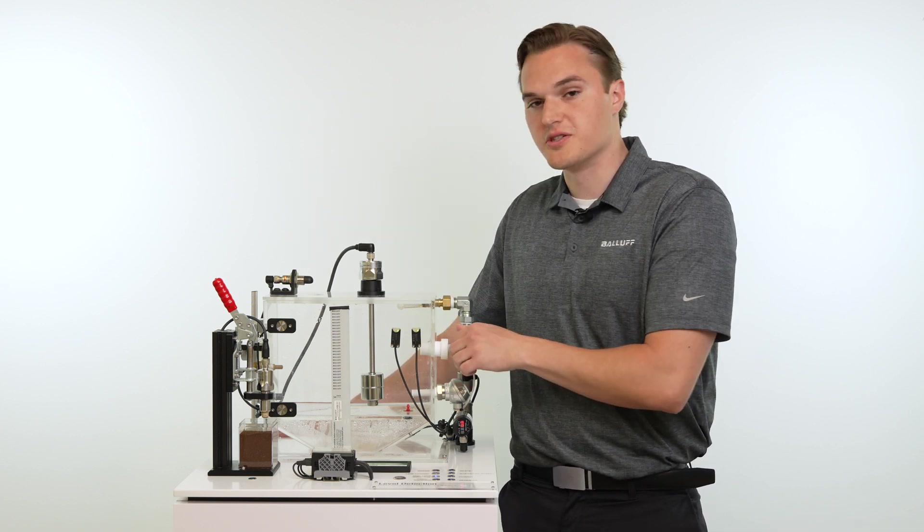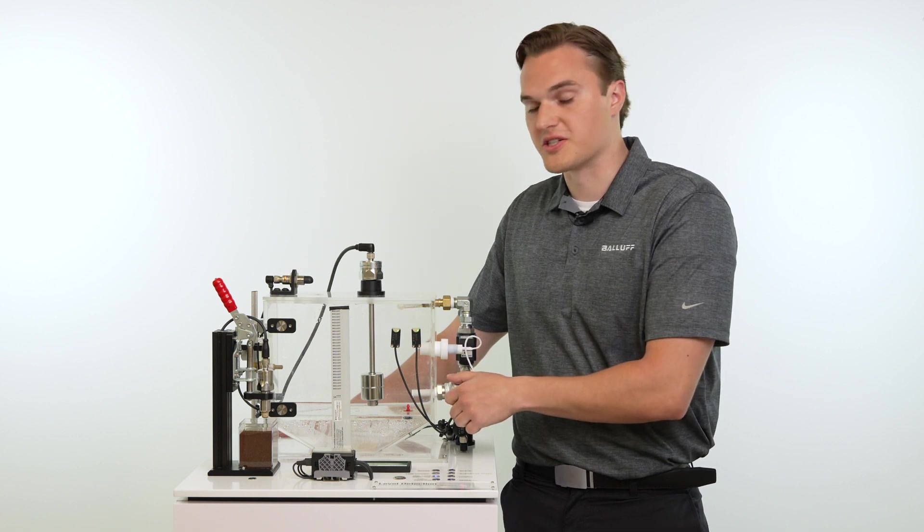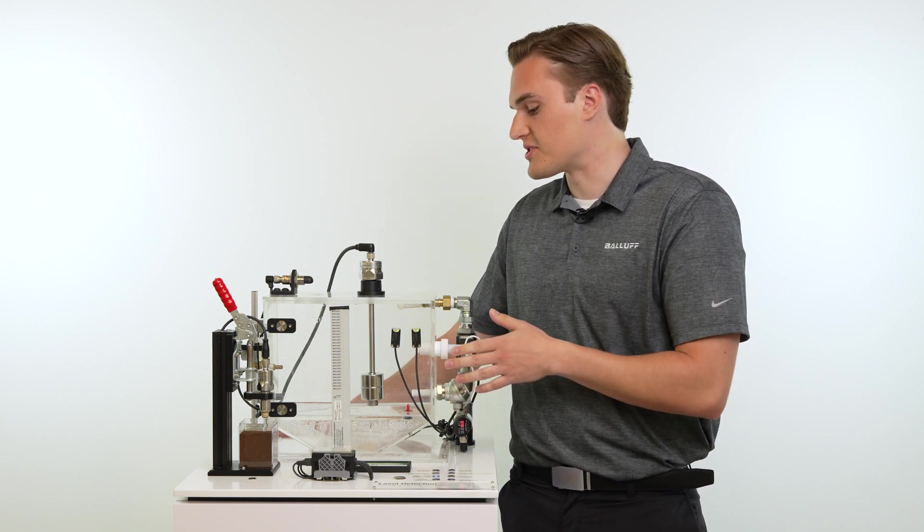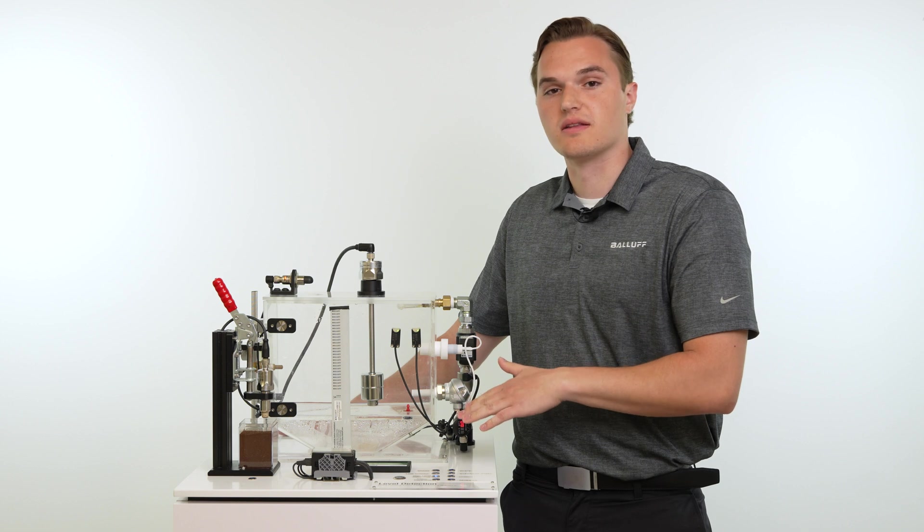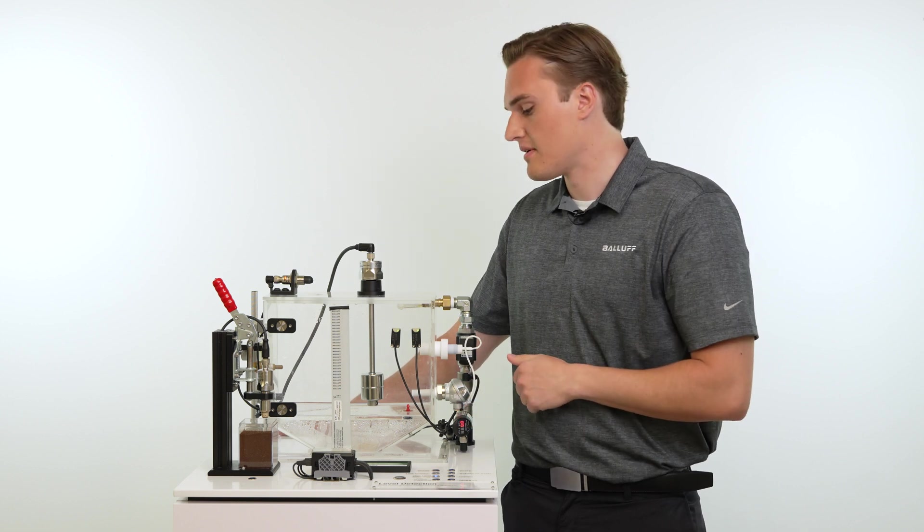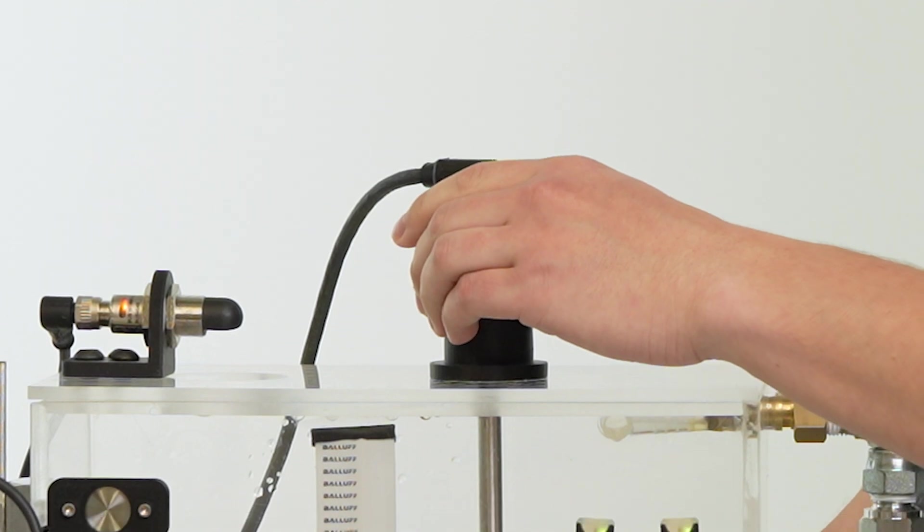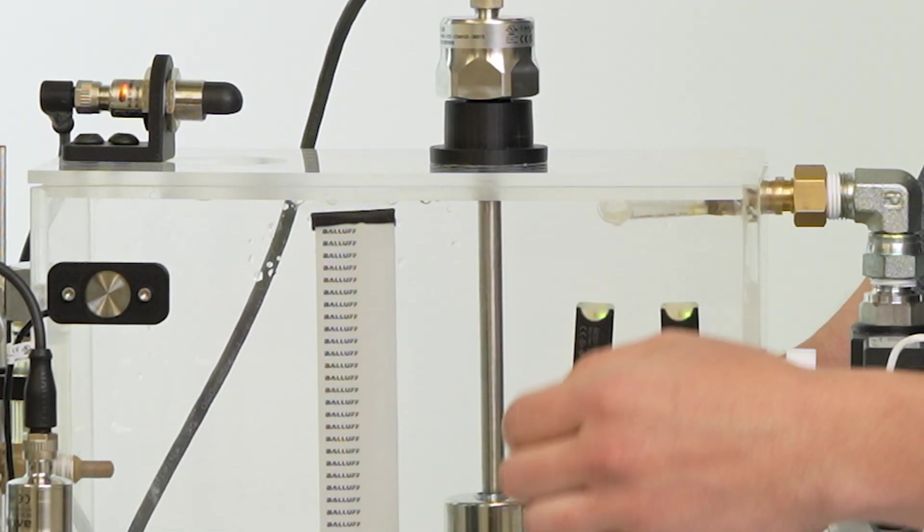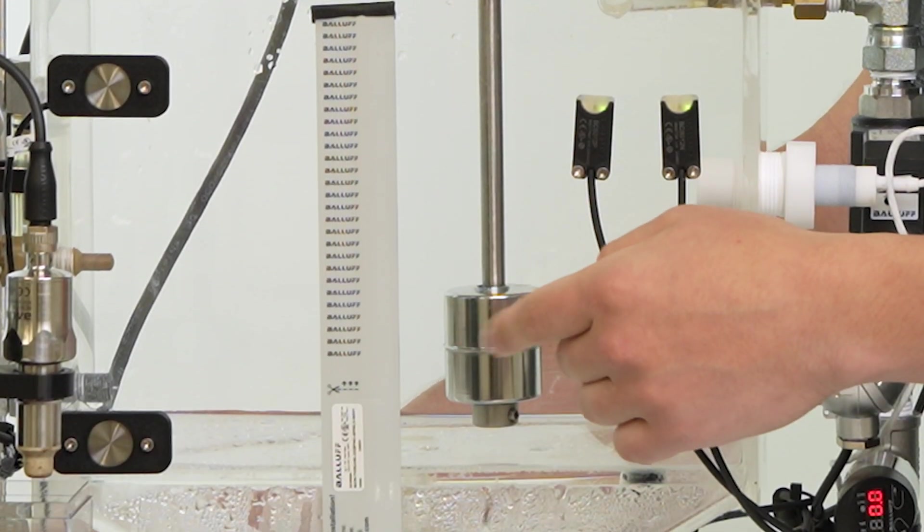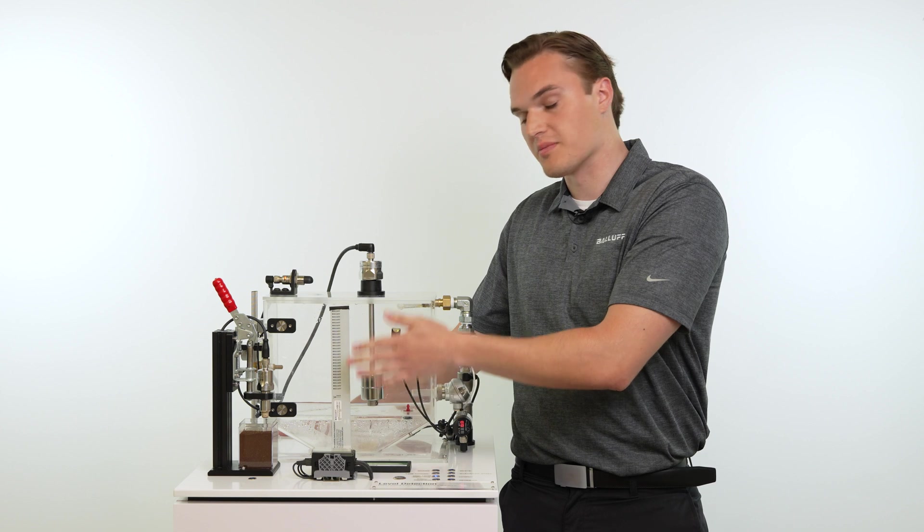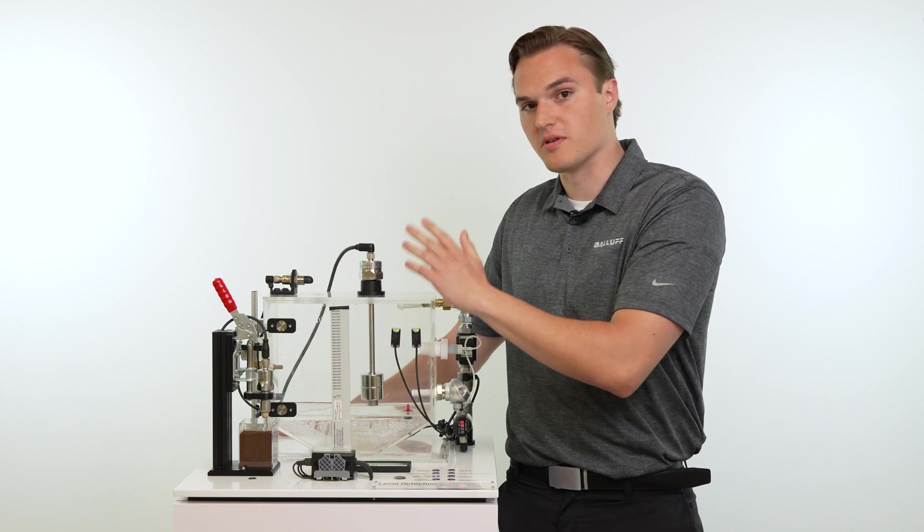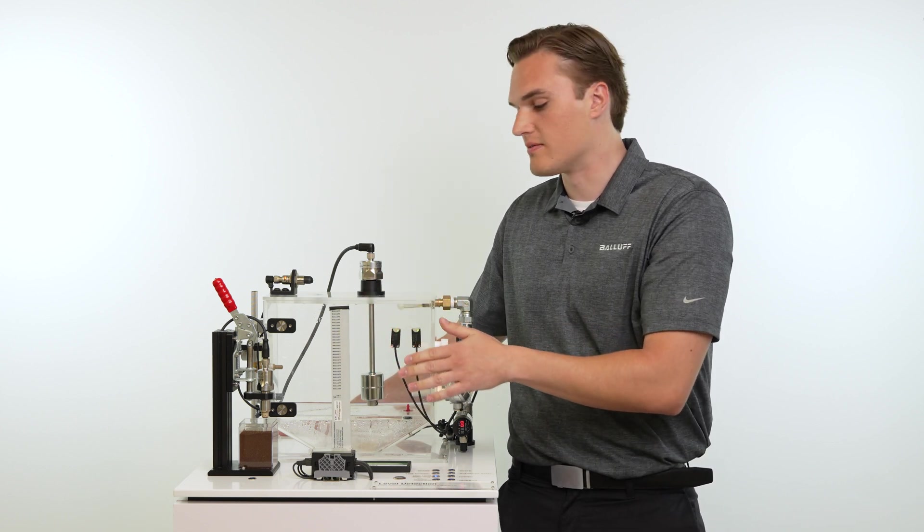In addition to point level detection, we have sensors and options that'll be able to detect level throughout the tank entirely. We have an IP67 rated linear transducer that has a float attached to it. That float has a magnet in it and as it goes up and down the linear transducer it'll give you an exact and precise analog reading of that level.